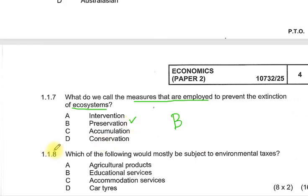Question 1.1.8: Which of the following would mostly be subject to environmental taxes? We know we are left with D, so D is the correct answer for 1.1.8. Remember the trick — you need to have two A's, two B's, two C's, and two D's in your answers.